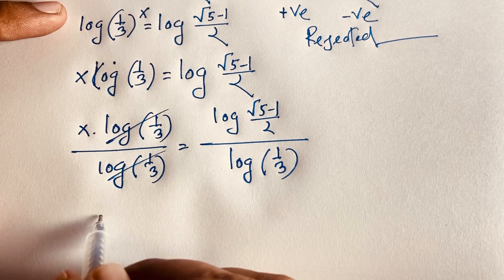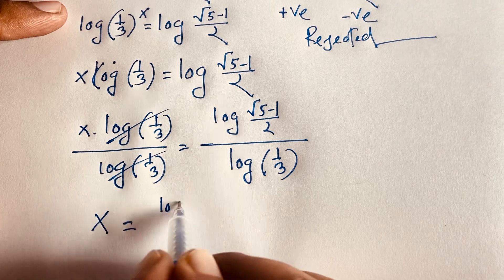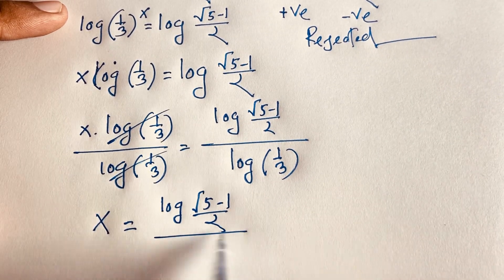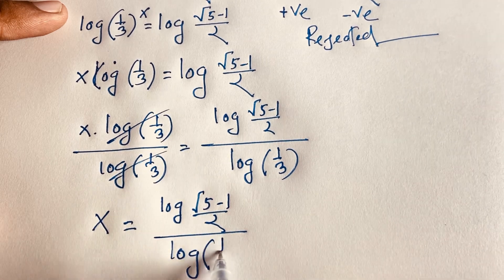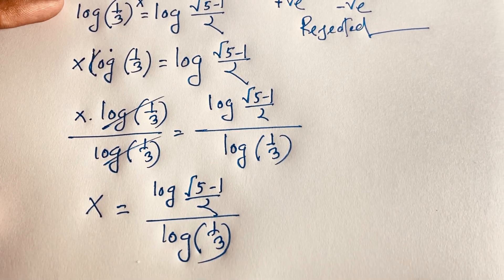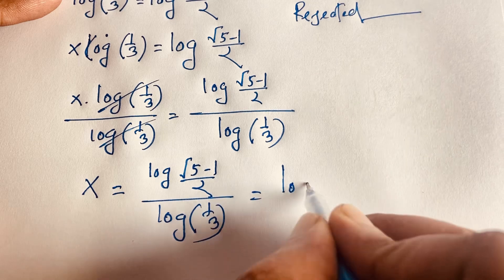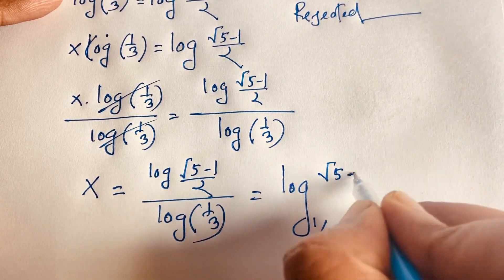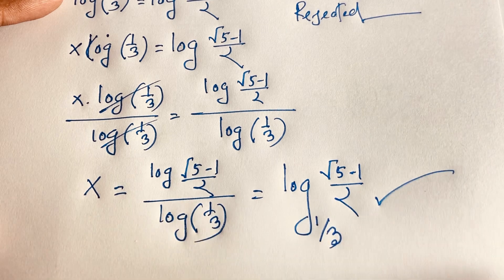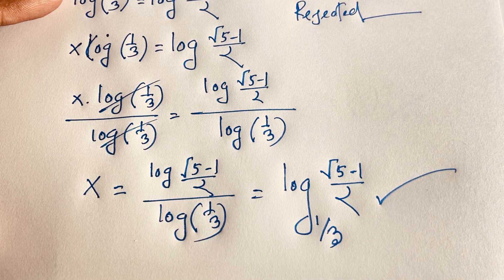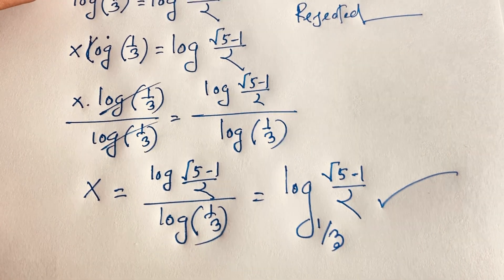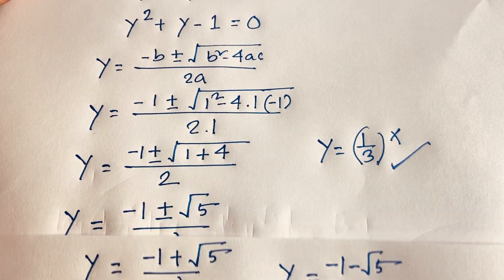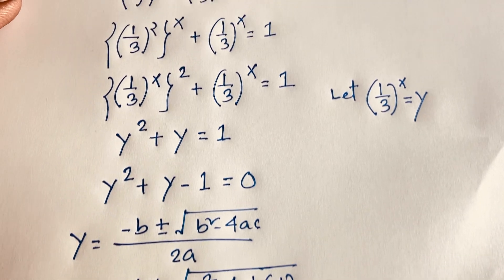Our final answer is x equals log of (square root of 5 minus 1 over 2) divided by log(1/3). This is our final answer for this exponential equation. Thank you all. If you enjoyed this video, please subscribe to my channel for other interesting videos. Goodbye, take care.